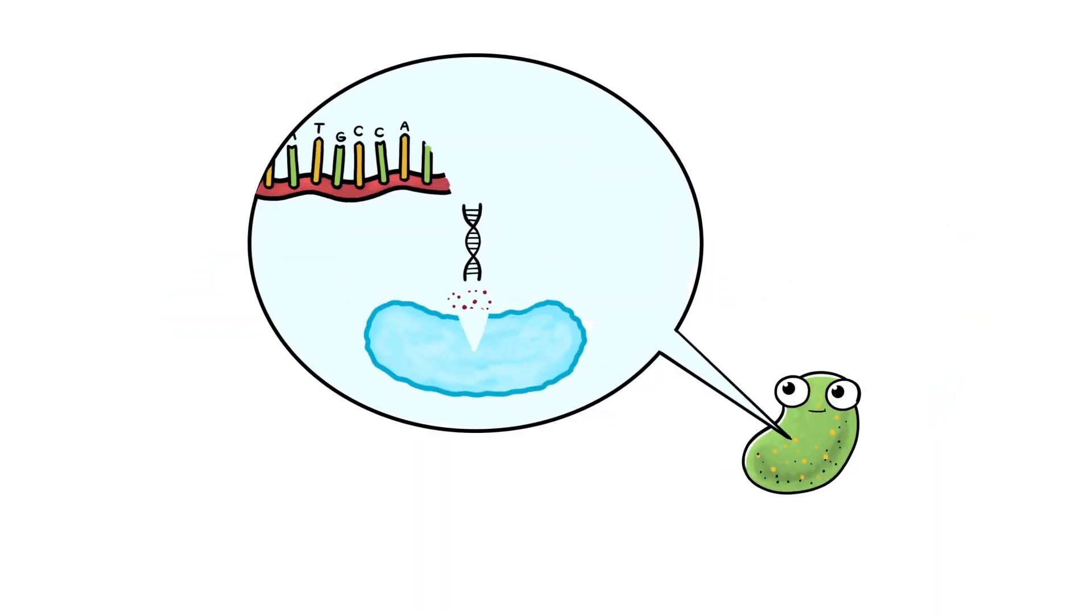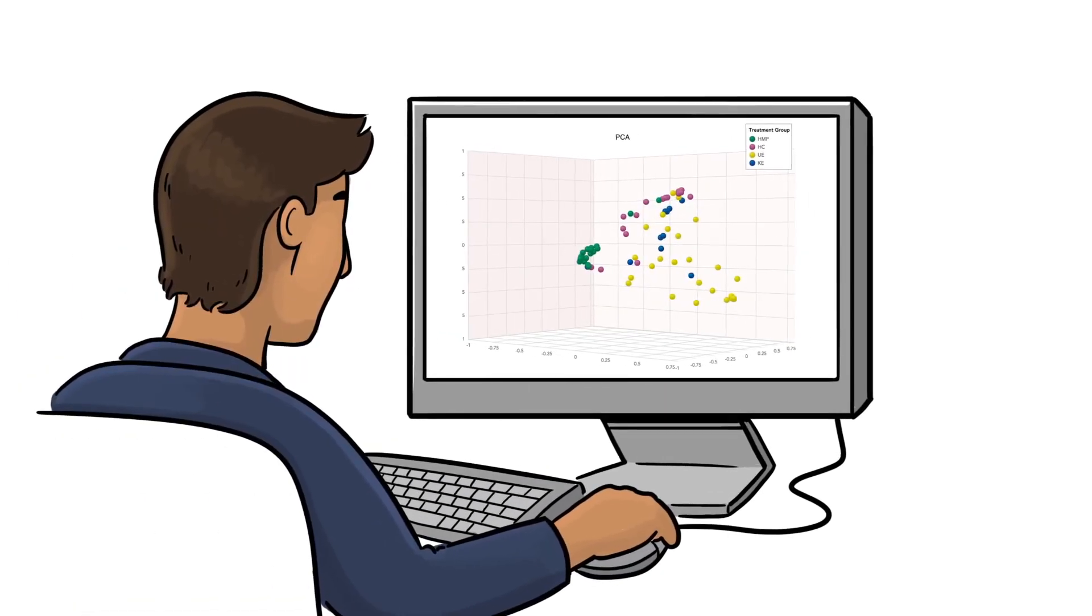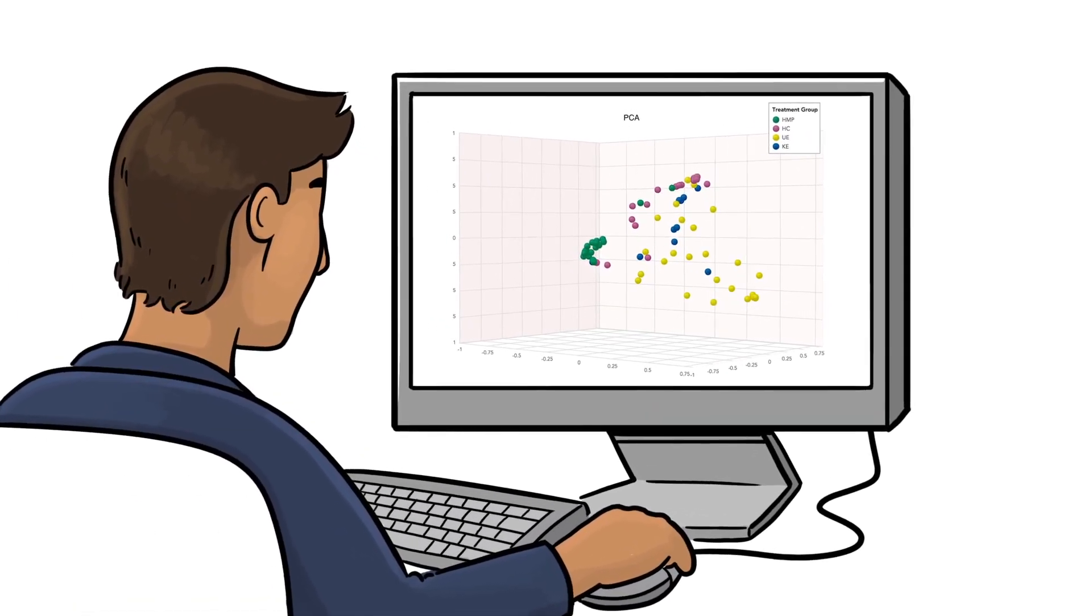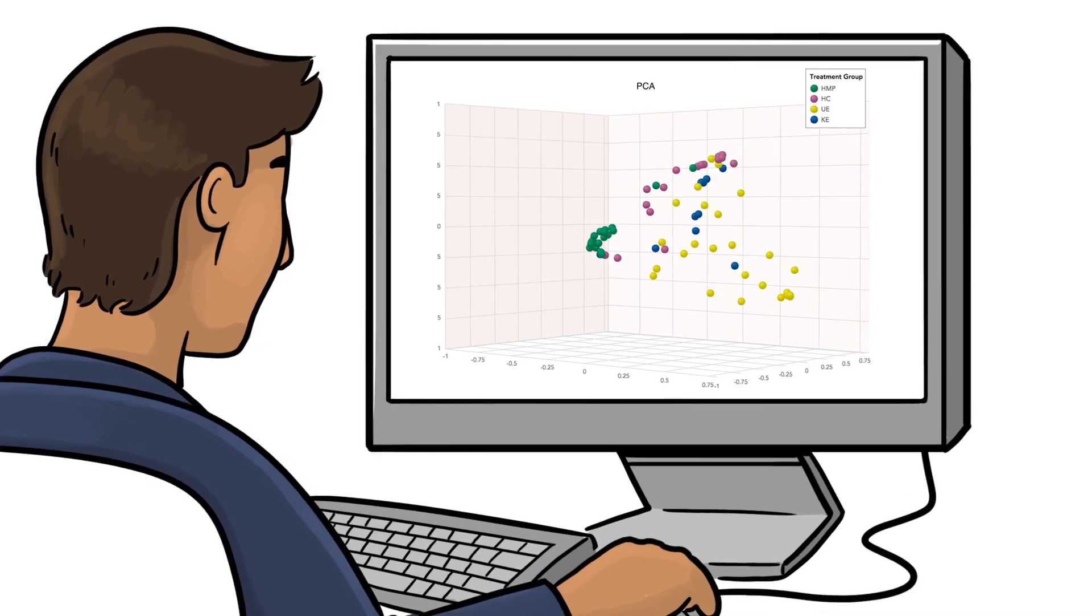First, the cells are sheared, and their DNA is extracted and sequenced. Then we use our algorithms, software, and expert curated databases to distinguish different microbes from one another.